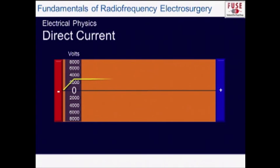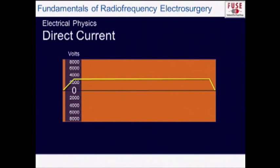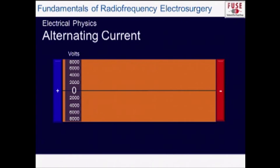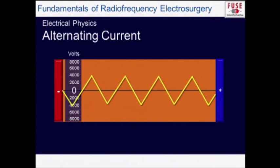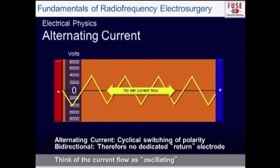What is direct current? If we think of a battery, it has a constant positive and negative pole. On an oscilloscope, you'd see a single deflection with current flowing one way. With alternating current, however, polarity alternates — 500,000 times per second in our case. So there is no dedicated return electrode. This is not a unidirectional circuit — think of the current as oscillating at the tissue level.